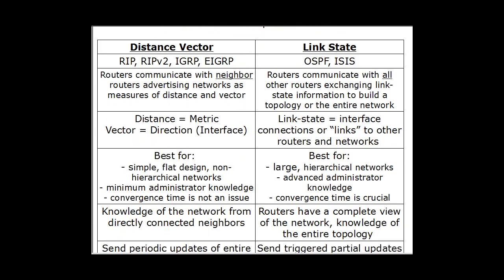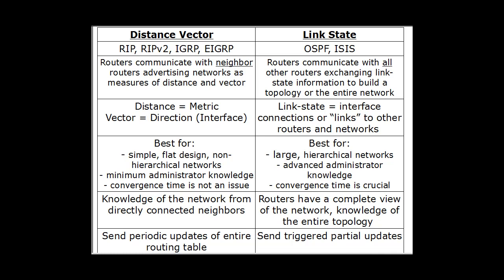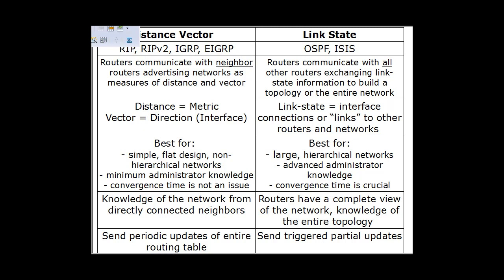Within Interior Gateway Protocols, we're talking about two types: Distance Vector and Link State Protocols. Distance Vector Protocols include RIP, RIP version 2, IGRP, and EIGRP. IGRP and EIGRP are both Cisco proprietary protocols written by Cisco. RIP is the oldest routing protocol out there — it's a bit outdated but still taught in the Cisco curriculum. Link State Protocols include OSPF (Open Shortest Path First) and ISIS, and you must know how to configure OSPF for the Cisco CCNA.